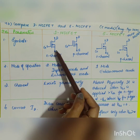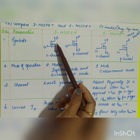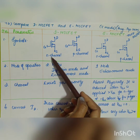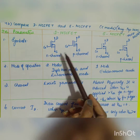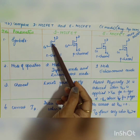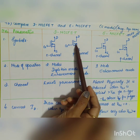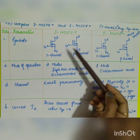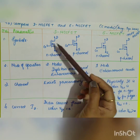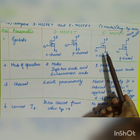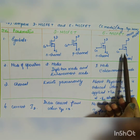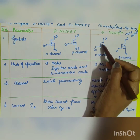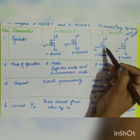This will be the symbol of the Depletion MOSFET, given for both N-channel and P-channel — only the arrow mark will be different. In the case of the Enhancement MOSFET, this is for N-channel and for P-channel. The only difference will be in the split of the source and drain.